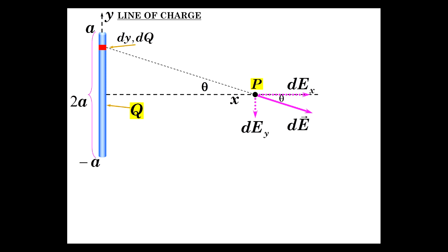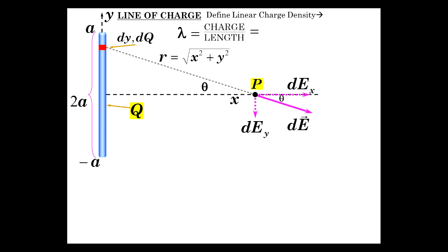We also have a differential electric field in the y direction. Now r, the distance separating the charge from the point, is just the hypotenuse of the line — so the square root of x squared plus y squared. We define what we call linear charge density. This is an important concept that will recur and transform into surface charge density and other things. Linear charge density is just lambda, and it's charge per length. So the charge density is Q over 2a — total charge over total length.